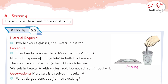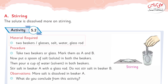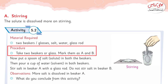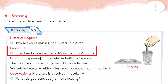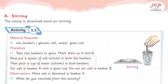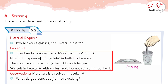Activity 5.2, page number 42: Materials needed — two beakers or glasses, salt, and water. Procedure: Take two beakers, label them A and B. Put a spoon of salt as solute in both beakers, then pour a cup of water as solvent into both. Stir the salt in beaker A.